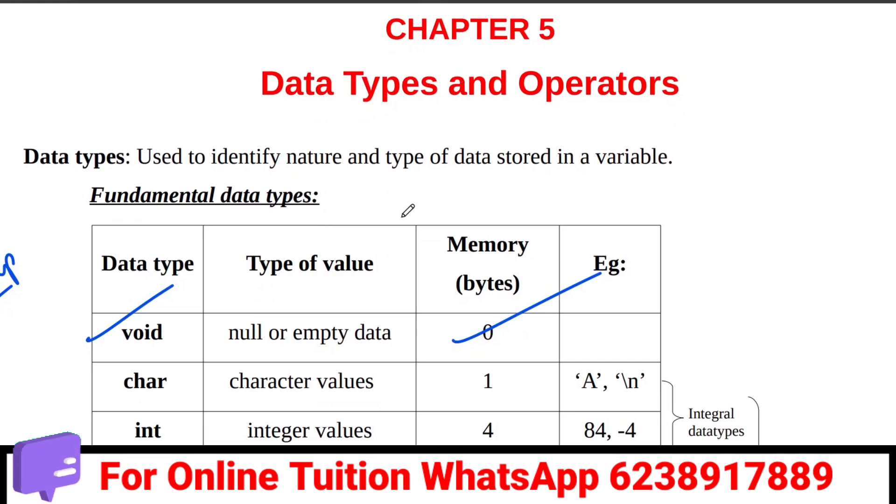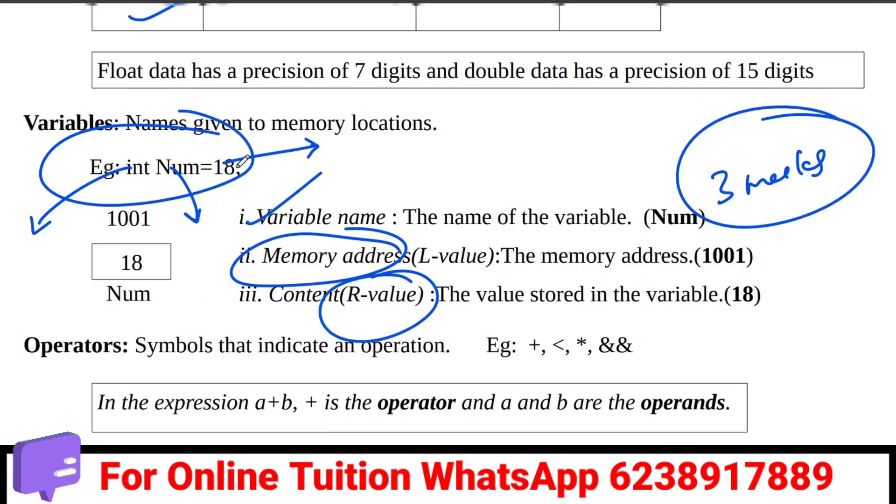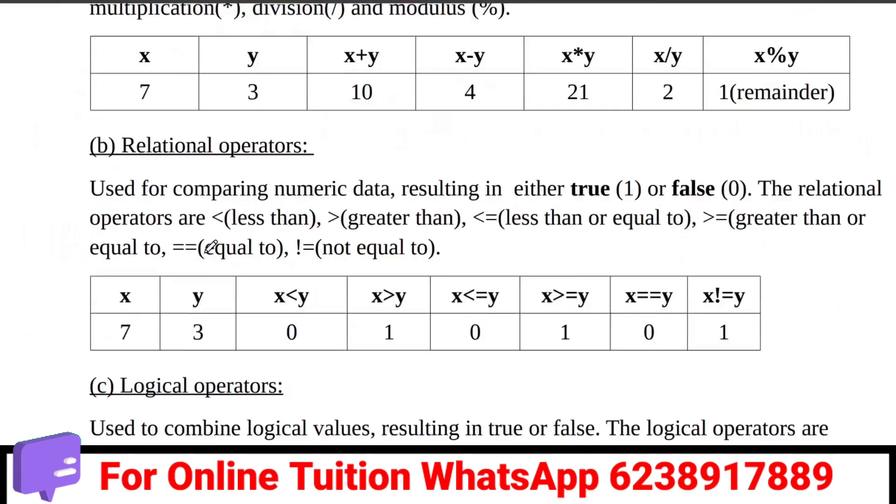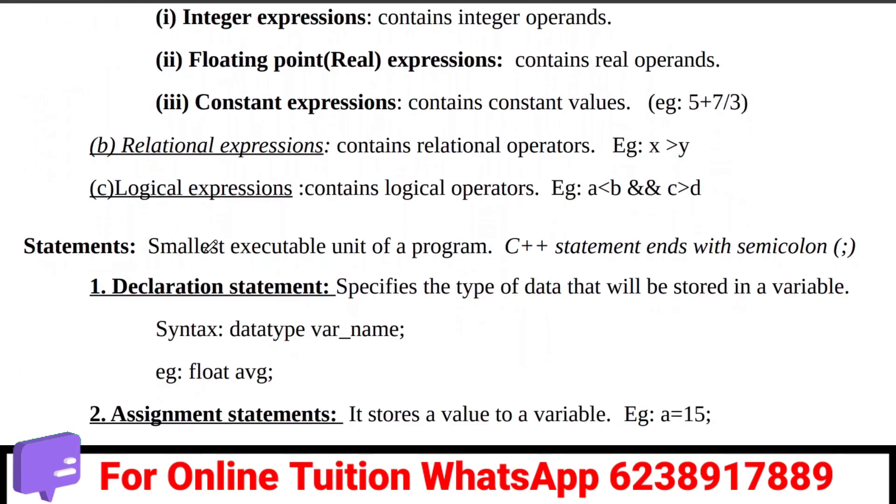In chapter 5, I expect fundamental data types, variable and different components like memory address, L value, R value - this is 3 marks. I expect different types of operators, explain operators you can also use essay questions.